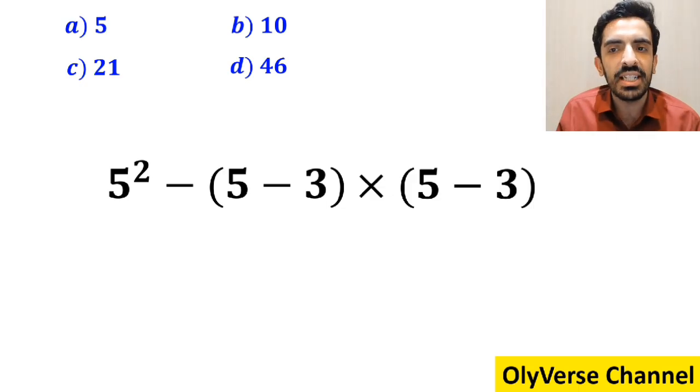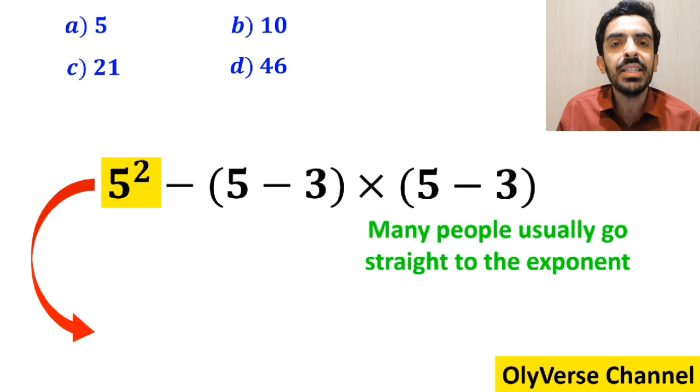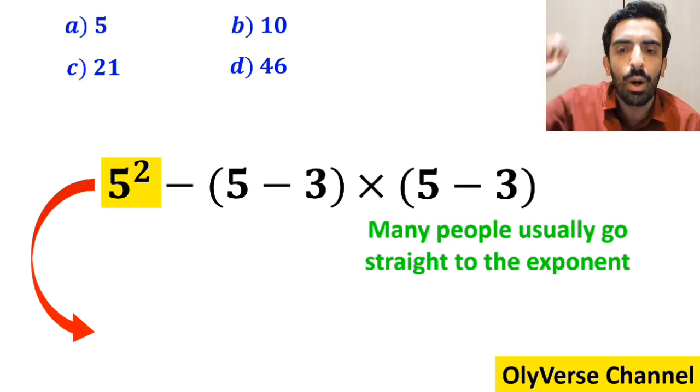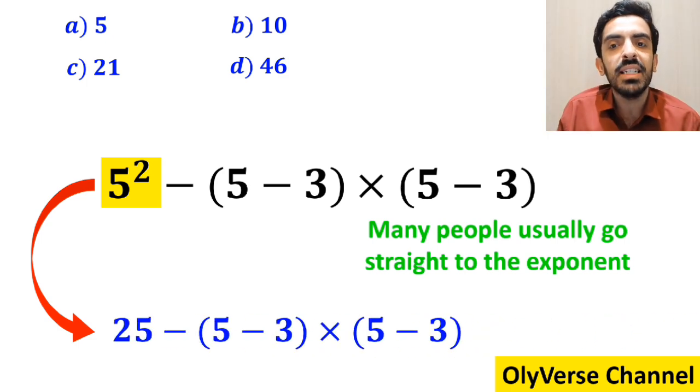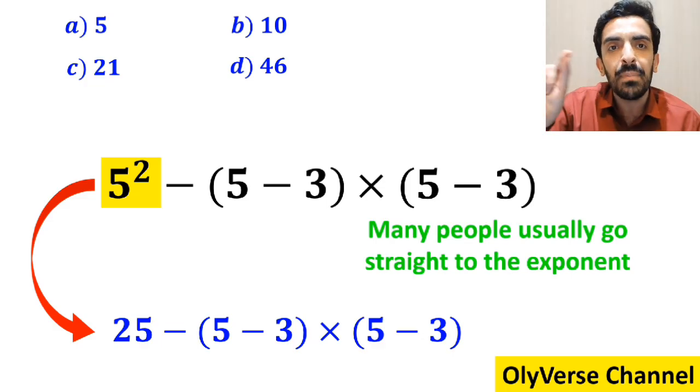In the first step to solve this question, many people usually go straight to the exponent and rewrite the whole expression in the following form: 25 minus 5 minus 3 inside the parenthesis, then multiply it by 5 minus 3 inside the parenthesis again.